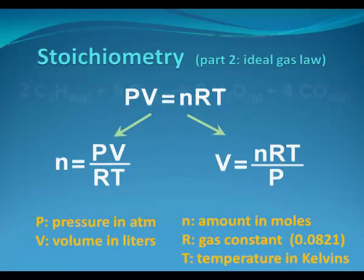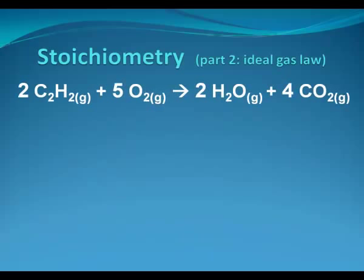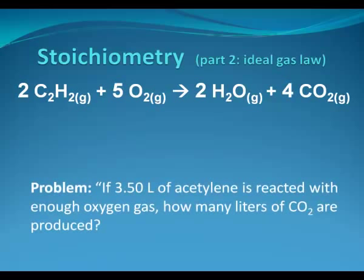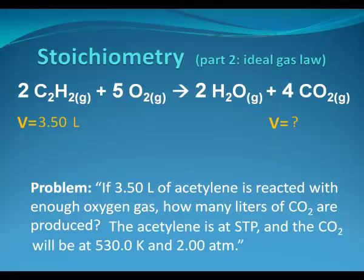Let's get to some stoichiometry. All stoichiometry starts with a chemical reaction. Here's a balanced chemical reaction where we have acetylene reacting with oxygen to form water and carbon dioxide. The problem we'll be using with this reaction is as follows. If we have 3.5 liters of acetylene, we react it with enough oxygen gas, how many liters of carbon dioxide are produced? Since these are gases, we need to know more. We need to also know the temperature and the pressure.